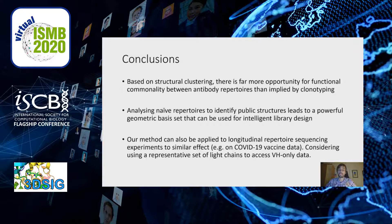In conclusion, based on antibody structural clustering, there is far more opportunity for observing functional commonality than we can currently access just by doing clonotyping experiments. Analysing naive repertoires allows us to identify a set of public structures, which could be exploited as a general screening library against many different relevant antigens. Our method can also be applied in a longitudinal NGS repertoire context to pick out similar responses across different individuals.